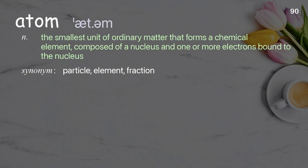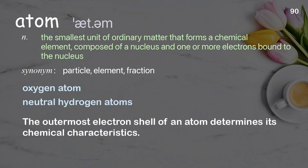Atom: the smallest unit of ordinary matter that forms a chemical element, composed of a nucleus and one or more electrons bound to the nucleus. Examples: oxygen atom, neutral hydrogen atoms. The outermost electron shell of an atom determines its chemical characteristics.